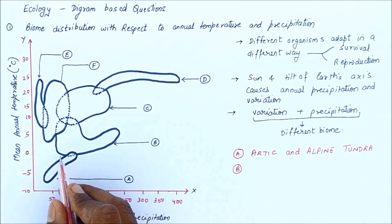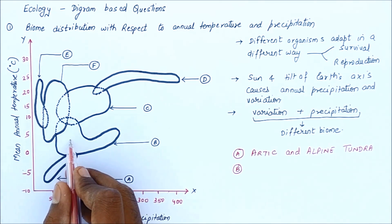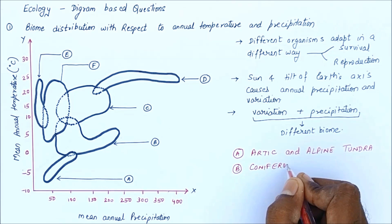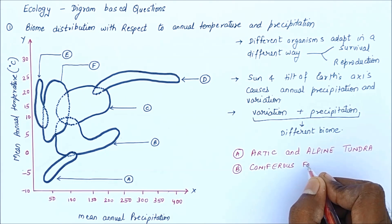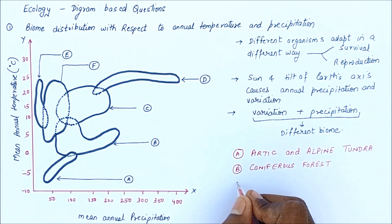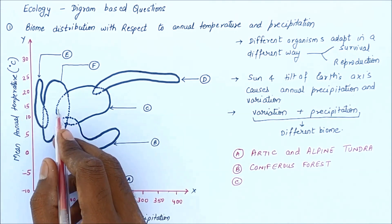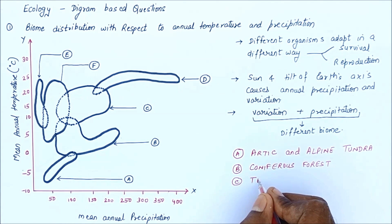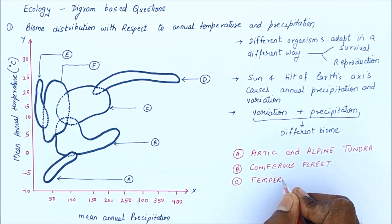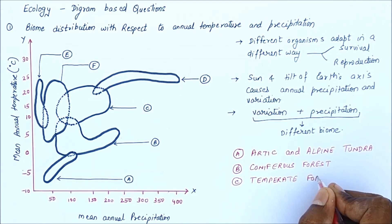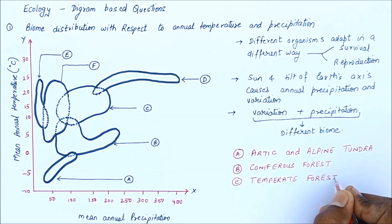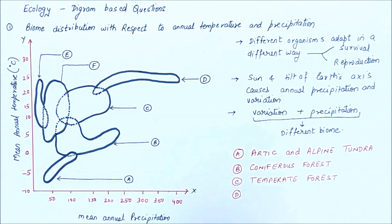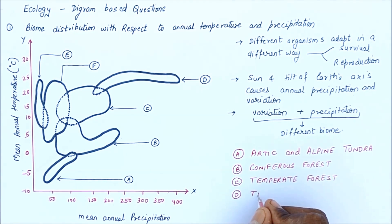Looking at part B, the temperature is somewhere above zero or five degrees but annual precipitation is on the higher side, so these are tall trees forming a coniferous forest. In part C, the temperature is also high and annual precipitation is somewhere in between, so it is called temperate forest. In part D, the temperature is around 20 to 25 degrees Celsius and mean annual precipitation is on the higher side, around 400, so it is tropical forest.